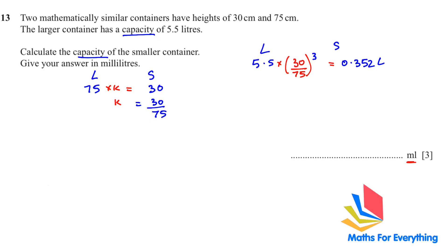1 liter equals 1000 milliliters. So therefore to change the liter into milliliter we will times it by 1000, and you will get 352 milliliters.